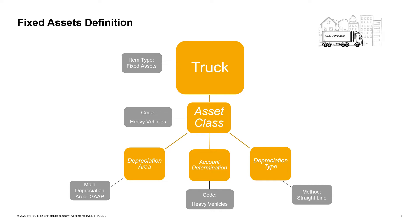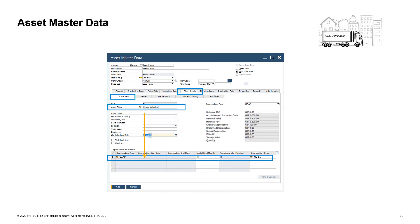The main depreciation area, GAAP in our example, posts transactions to the system. The additional area, IFRS in our example, can be used for reports. The account determination definition enables the system to automatically select the relevant GL accounts for assets accounting. The depreciation type classifies the depreciation based on the reason for the value adjustment, including the option to define the method for the value calculation. In our example, we choose the straight line method. Once you attach the asset class to the asset master data window, all related definitions will apply to the selected asset.